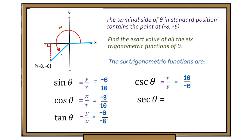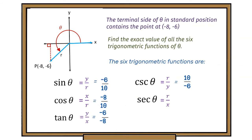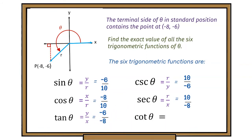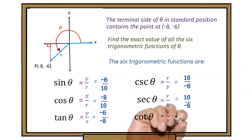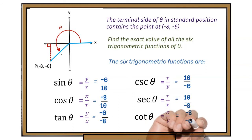Secant of theta is r over x, and that'll be 10 over −8. And the cotangent of theta is x divided by y, and that'll be −8 over −6. We can simplify those further using a calculator.